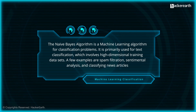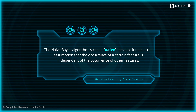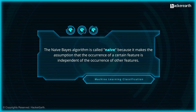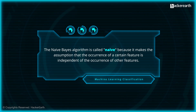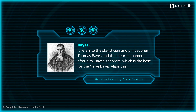This algorithm learns the probability of an object with certain features belonging to a particular group or class — in short, it is a probabilistic classifier. The algorithm is called 'naive' because it makes the assumption that the occurrence of a certain feature is independent of the occurrence of other features. For instance, if you are trying to identify a fruit based on its color, shape, and taste, an orange-colored, spherical, and tangy fruit would most likely be an orange — even if these features depend on each other, all of them individually contribute to the probability.